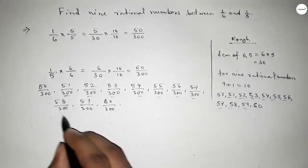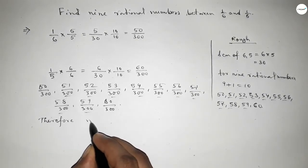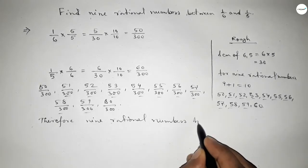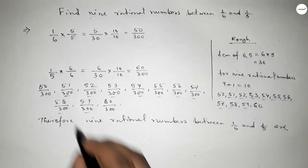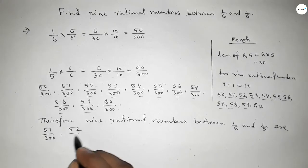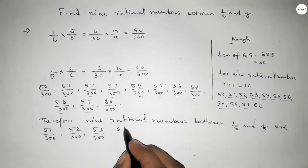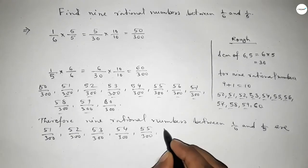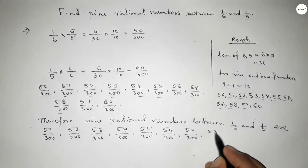These are the required nine rational numbers between 1/6 and 1/5. Therefore, nine rational numbers between 1/6 and 1/5 are: 51/300, 52/300, 53/300, 54/300 to 59/300. This is the process to find out nine rational numbers between 1/6 and 1/5.